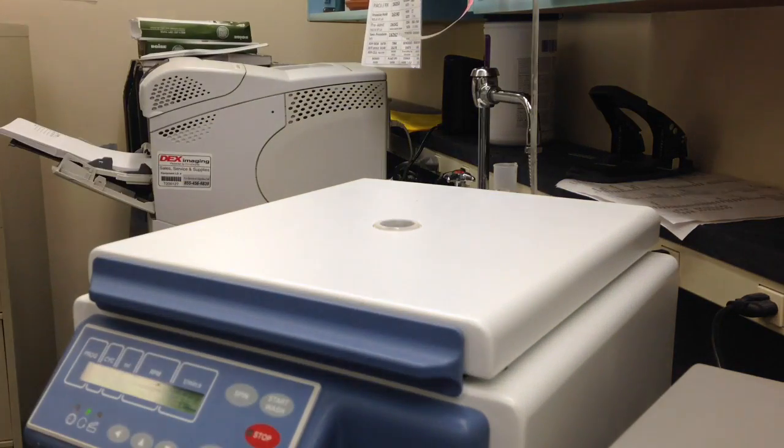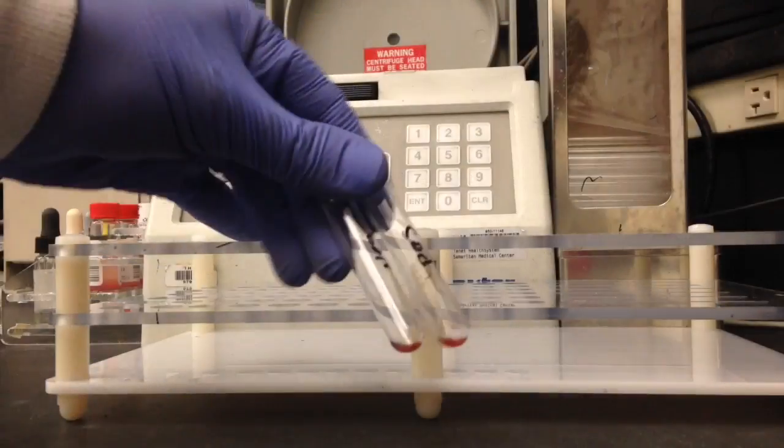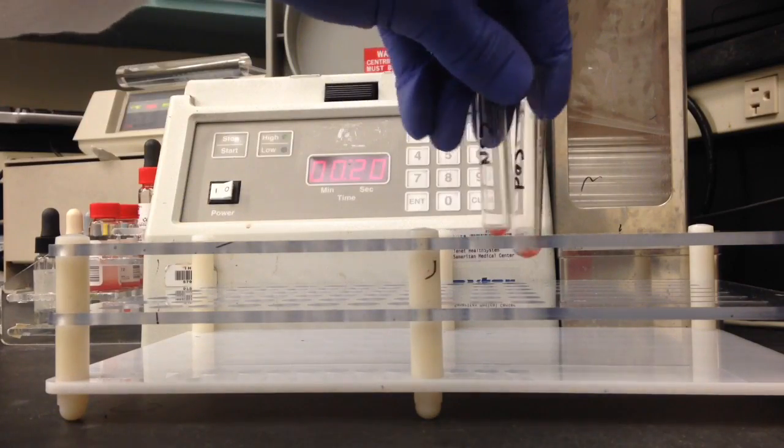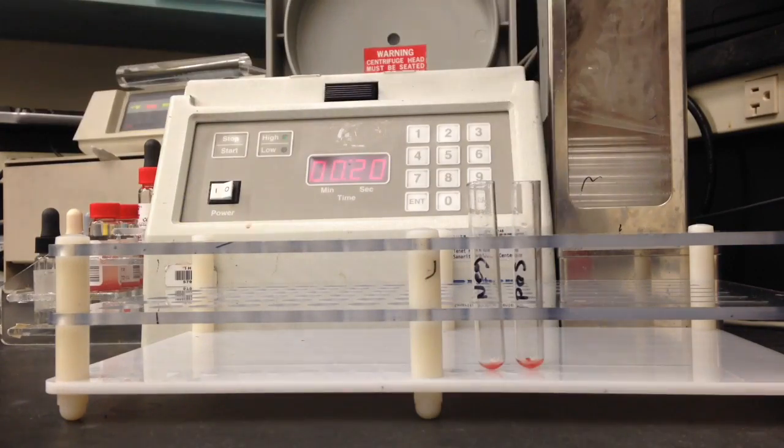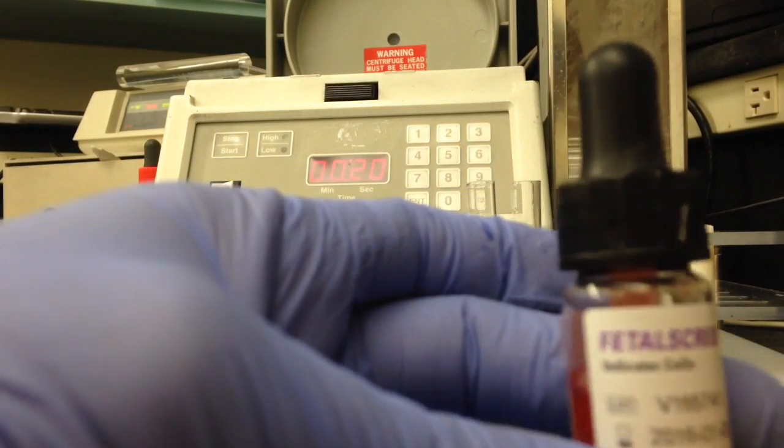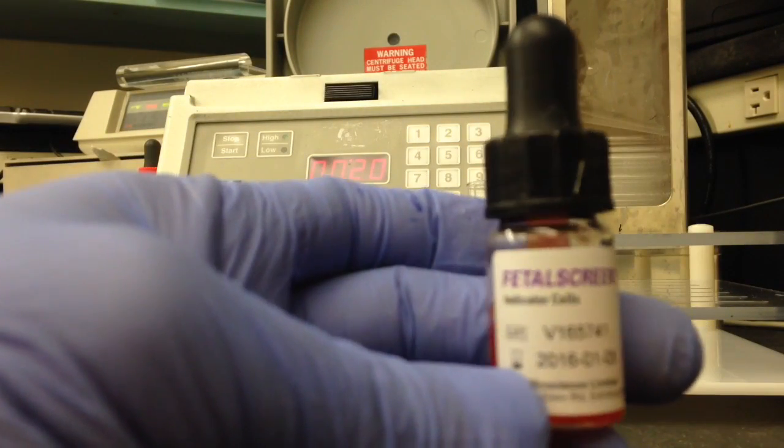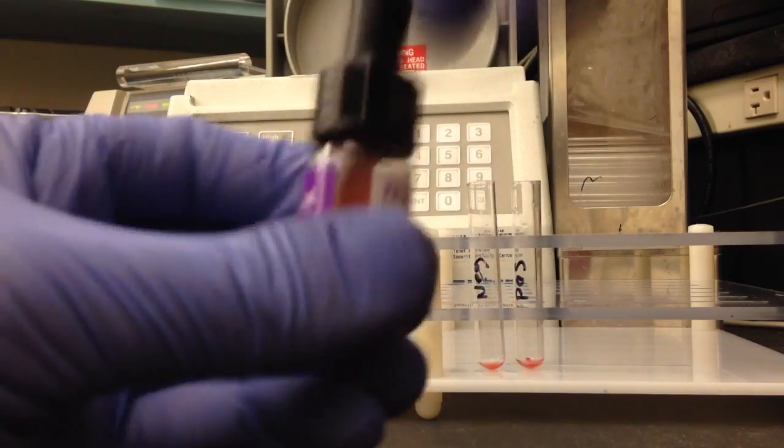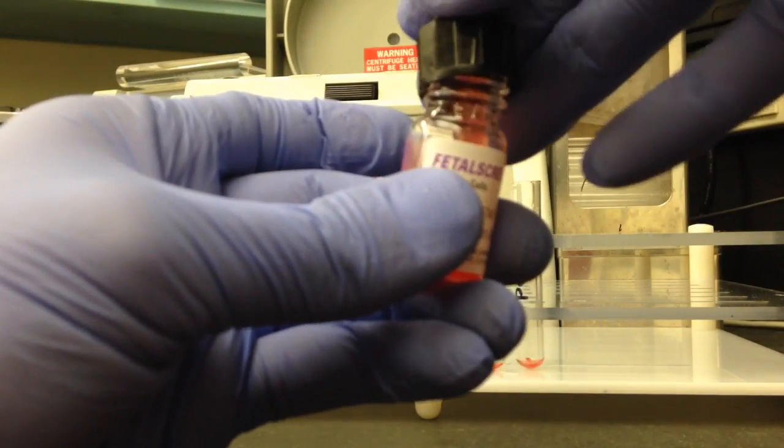So four times and then after that we go ahead and take them out. You can see those are nice and washed and the next step will be grabbing the indicator cells, giving them a quick mix to make sure there's nothing stuck to the bottom, and then we're just gonna go ahead and add one drop of the indicator cells to each of our tubes.